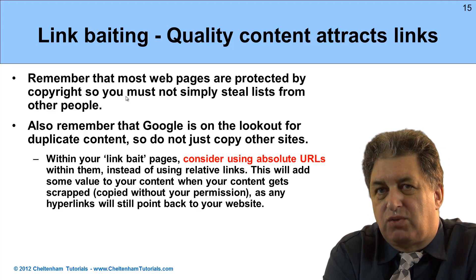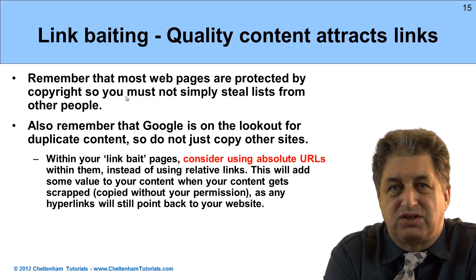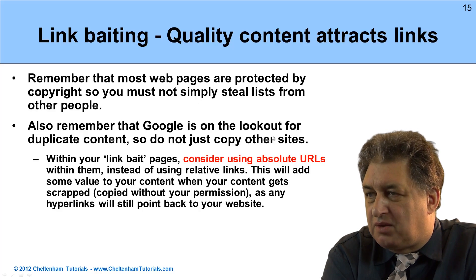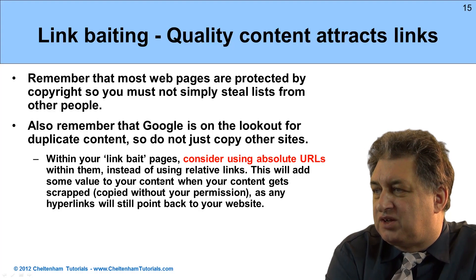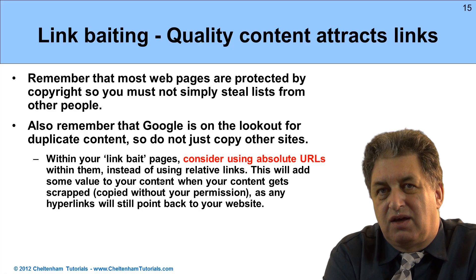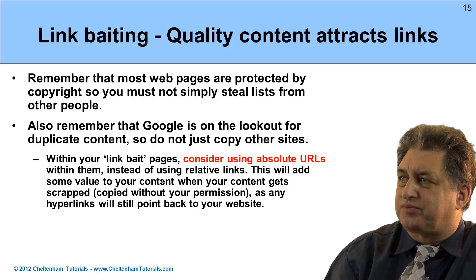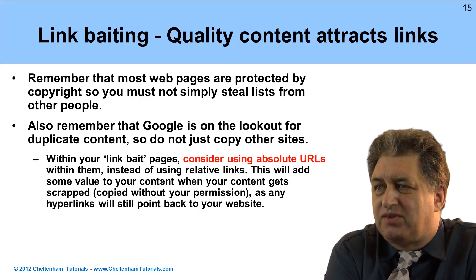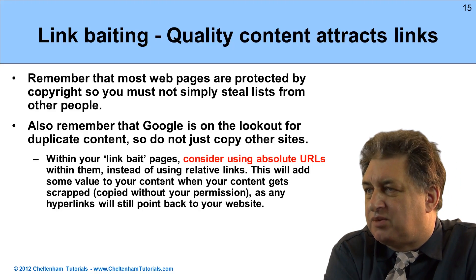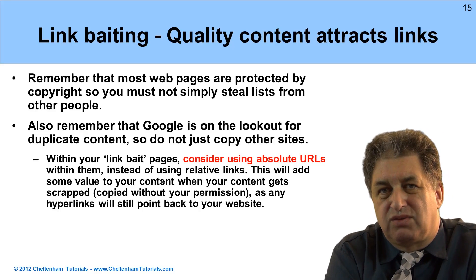If you've got a very good top 10 or top 20 list, you might find people start copying your content and pasting it onto their website as if it were theirs. One thing to consider is using what are called absolute URLs within the linking system. Within your top 10 list, instead of just having a relative link, you have an absolute link — which starts with http colon forward slash forward slash www — giving it the full URL listing. That means when someone copies it to their site, it will still link back to your original articles.